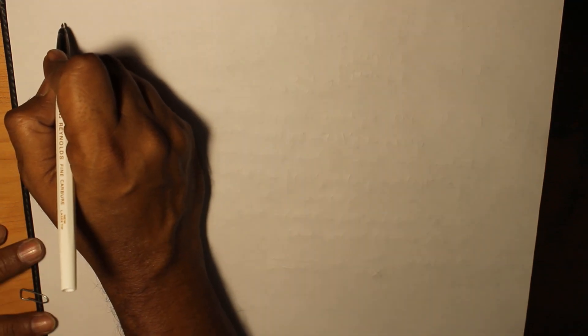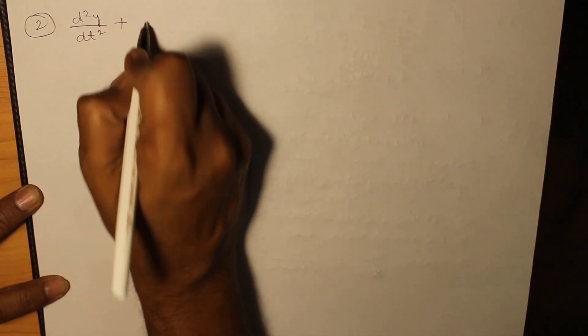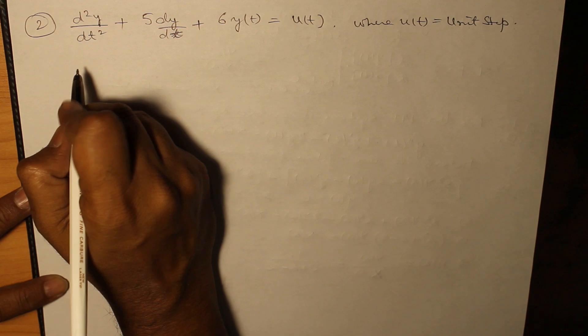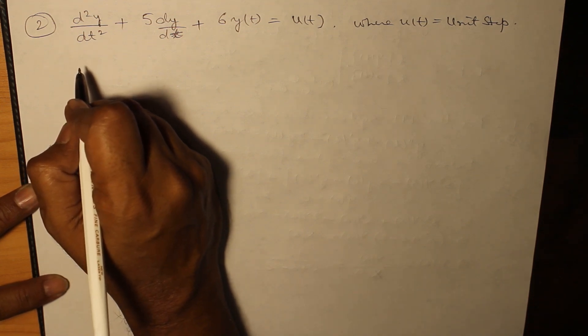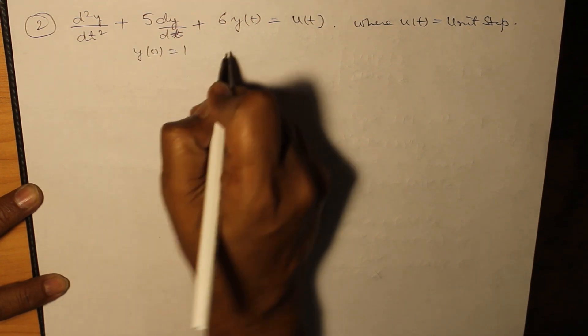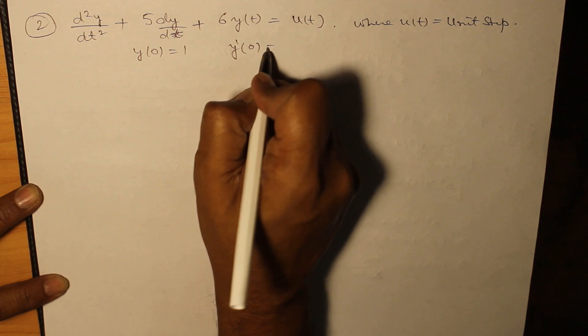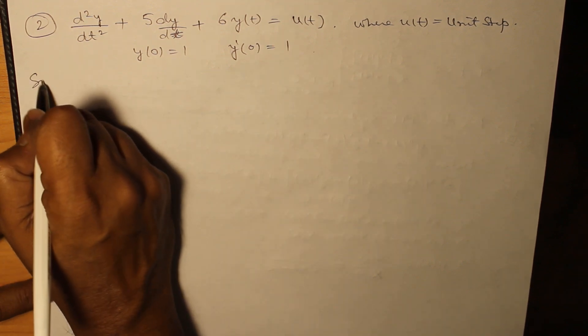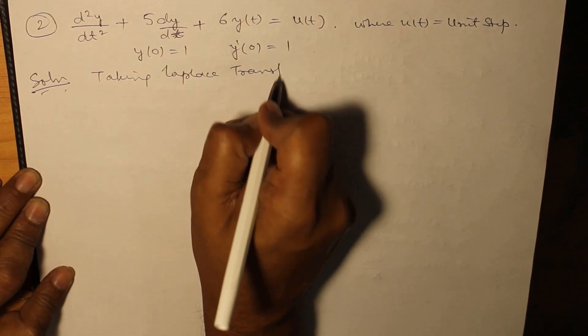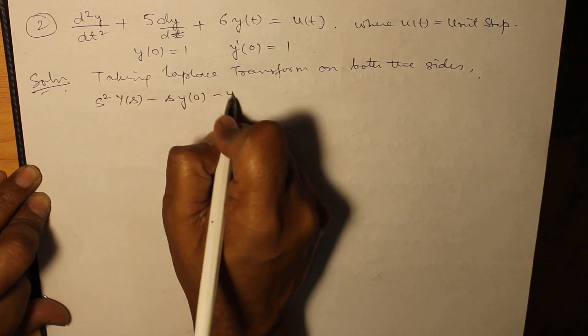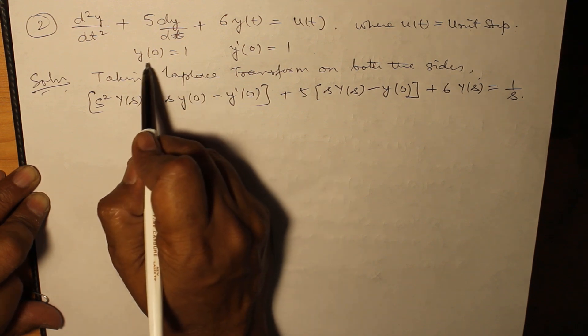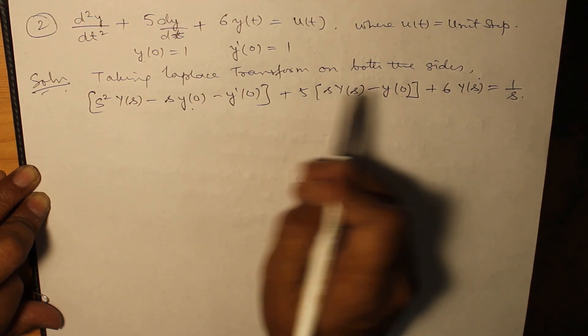Now let us suppose a differential equation is given: d²y/dt² + 5dy/dt + 6y(t) = u(t), where u(t) is unit step, with y(0) = 1 and y'(0) = 1. Again, taking Laplace transform on both the sides.